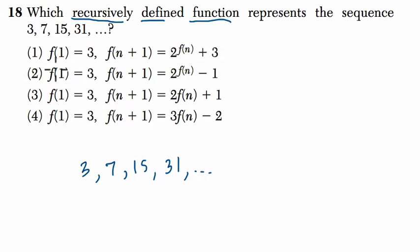And notice in all of my choices they all say f of 1 equals 3. What does that mean? Well, f of 1 means the function, f, at the first step. So when we're starting, essentially. And we notice that they all say f of 1 equals 3. That's because the first step of the function is 3. So that doesn't reveal anything to us.